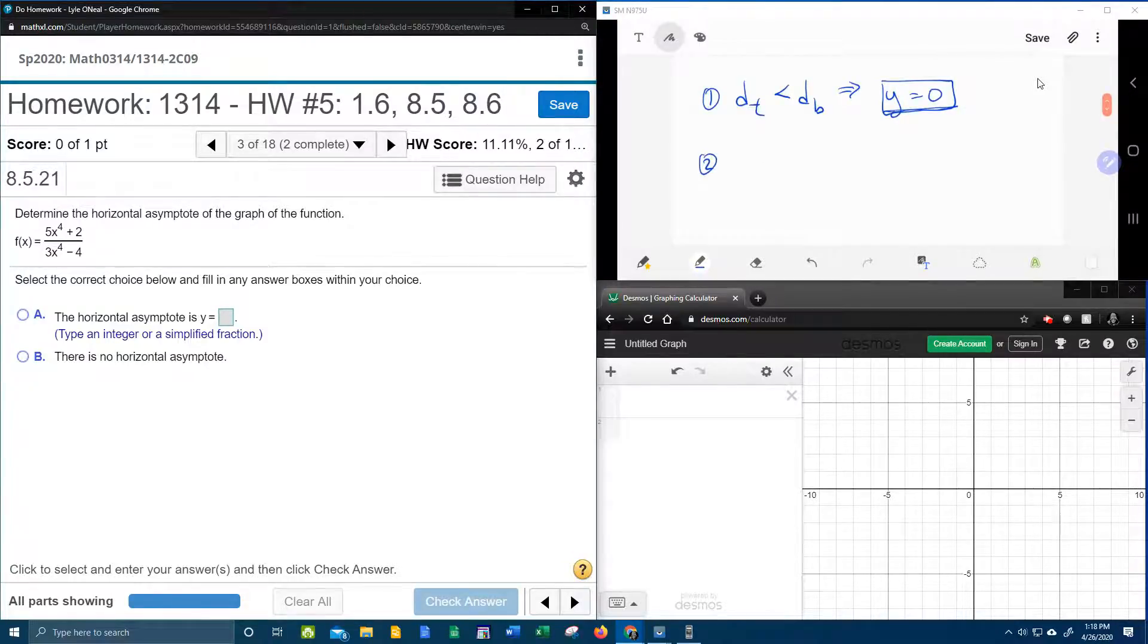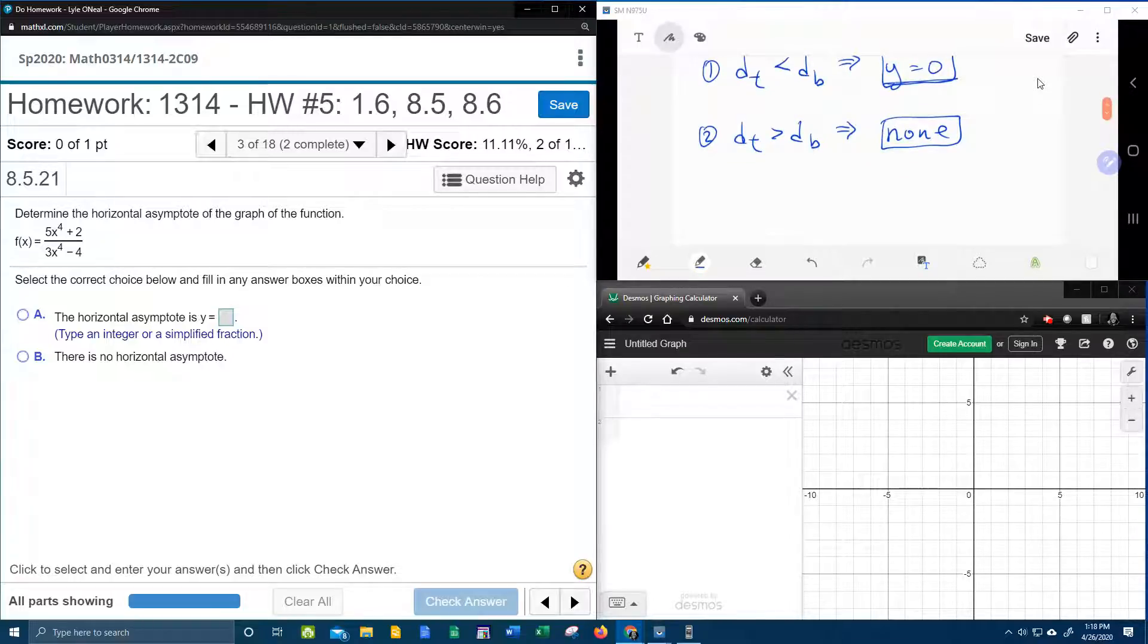Scenario number two, if the degree of the top is greater than the degree of the bottom, then your horizontal asymptote doesn't exist. There is none. There will be no horizontal asymptote if the degree of the top is greater than the degree of the bottom.